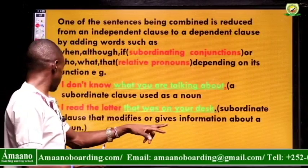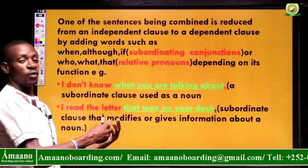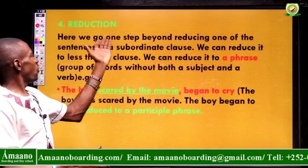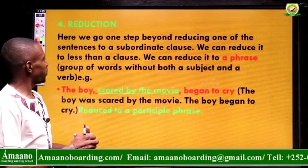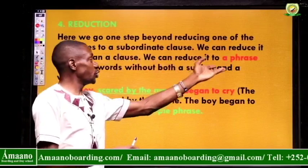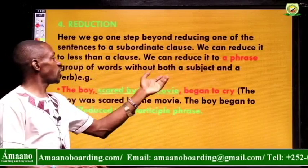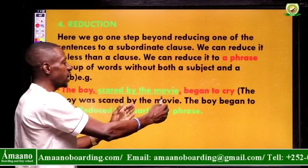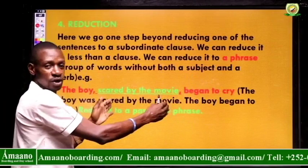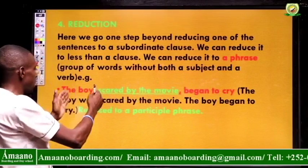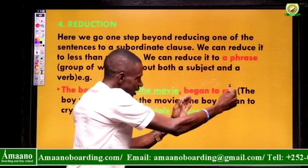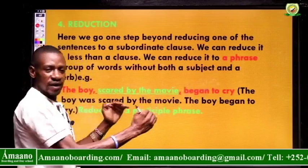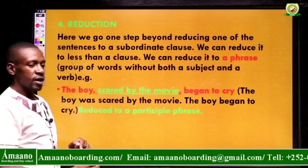For example: 'I don't know what you are talking about' and 'I read the letter that was on your table.' The subordinate clause 'that was on your table' modifies and gives information about the letter — which letter did you read? The letter that was on your desk. Then we have reduction: we go one step beyond reducing one sentence to a subordinate clause and reduce it further to a phrase — a group of words without both a subject and a verb. For example, 'The boy scared by the movie began to cry.' The full sentence would be 'The boy was scared by the movie and the boy began to cry,' but we reduce it.